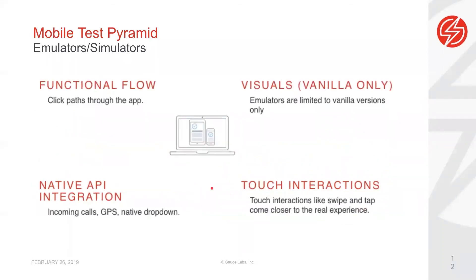What we can do in emulators and simulators includes functional flows — navigating through applications to make sure screen-to-screen flows are working. We can test incoming calls, GPS, and so on. We can test how our application actually looks in the emulators and simulators. And of course, we can do touch interactions like swiping and zooming, depending on the application.